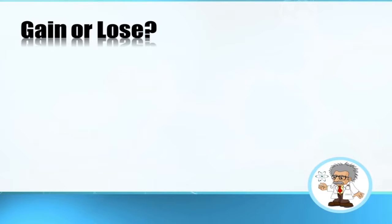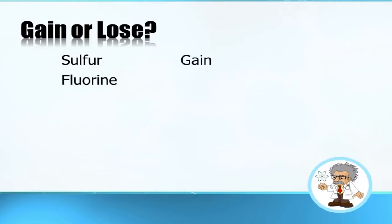Let's take a little test — gain or lose? Sulfur: look at your periodic table. It will gain. Fluorine, number nine: look at it and it will gain. It's easier to gain one than to lose seven.